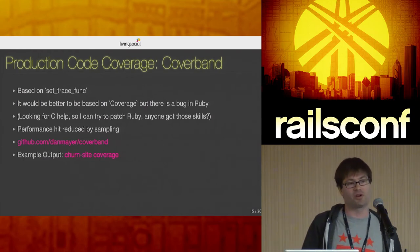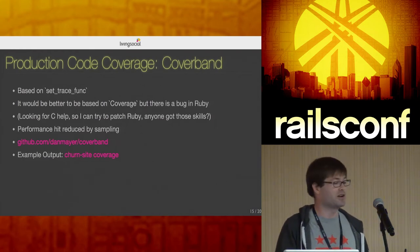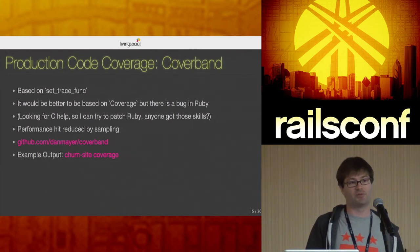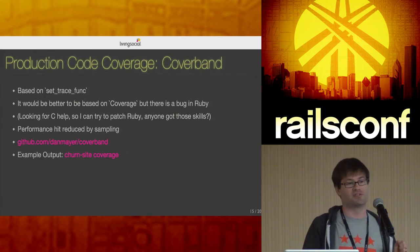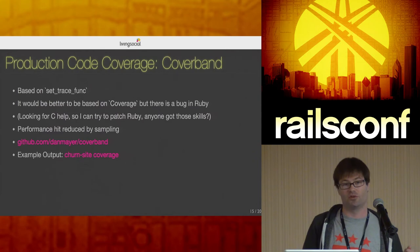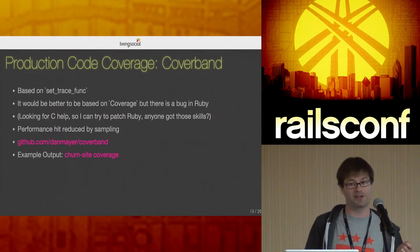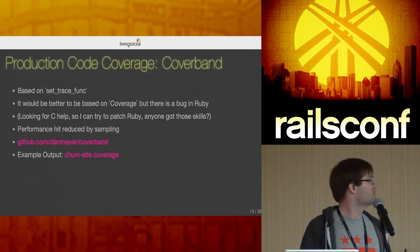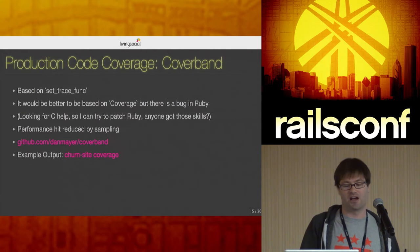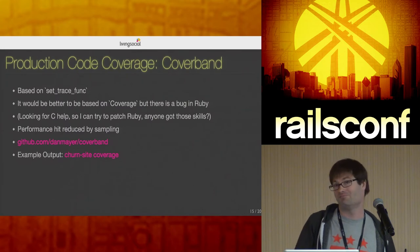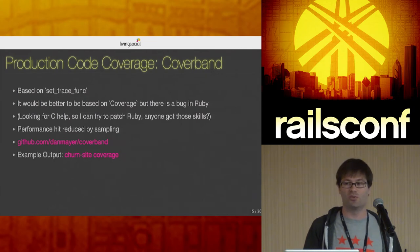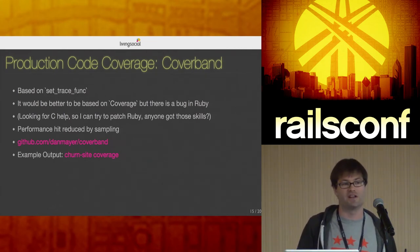Production code coverage is more experimental. I can't use Ruby's Coverage module because there's a bug — if you sample and turn it on and off it will crash. So I switched to using set_trace_func, which lets us see each line as it's being run live. We do sampling to cover for the fact that set_trace_func is extremely slow — sometimes 400-800x slower — but over large volume it still gives a pretty good picture of what's used in production.